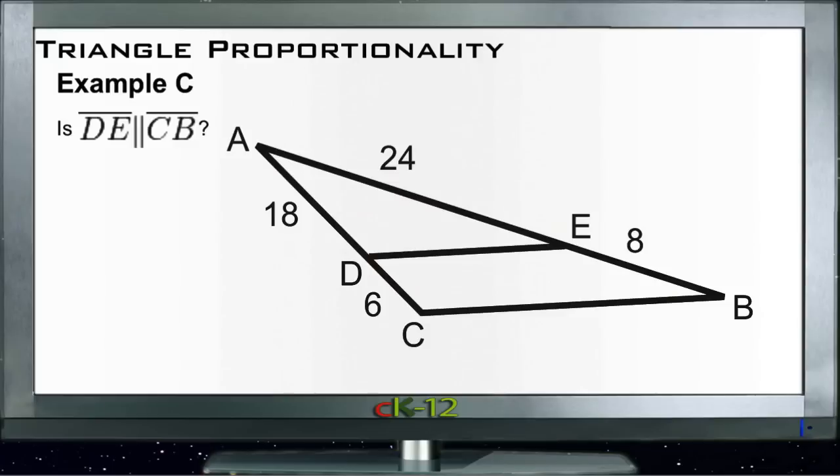All right, let's take a look at Example C. Example C says, is DE—so this line here—is it parallel to CB down here? We'll do it in yellow. So is our orange line parallel to our yellow line? Well, if it is, then we could use our proportionality statement to say that this segment here from E to B, this 8-unit segment, must be in the same proportion compared to the rest of its line, which is 24, as this segment here, 6, is to the rest of its segment, 18 here.